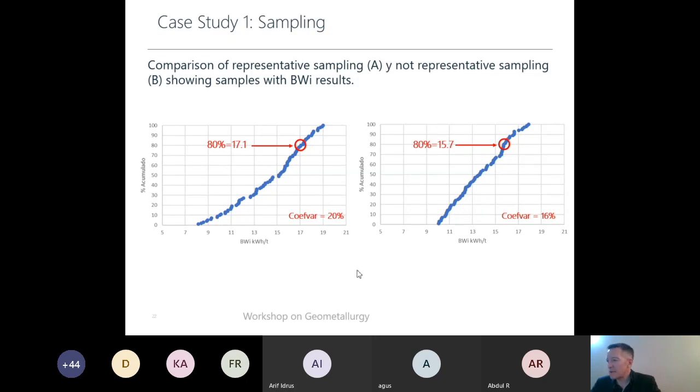So, to sum up, sampling is a very important topic, not only in geology, but also in geometallurgy. Representative sampling is key.